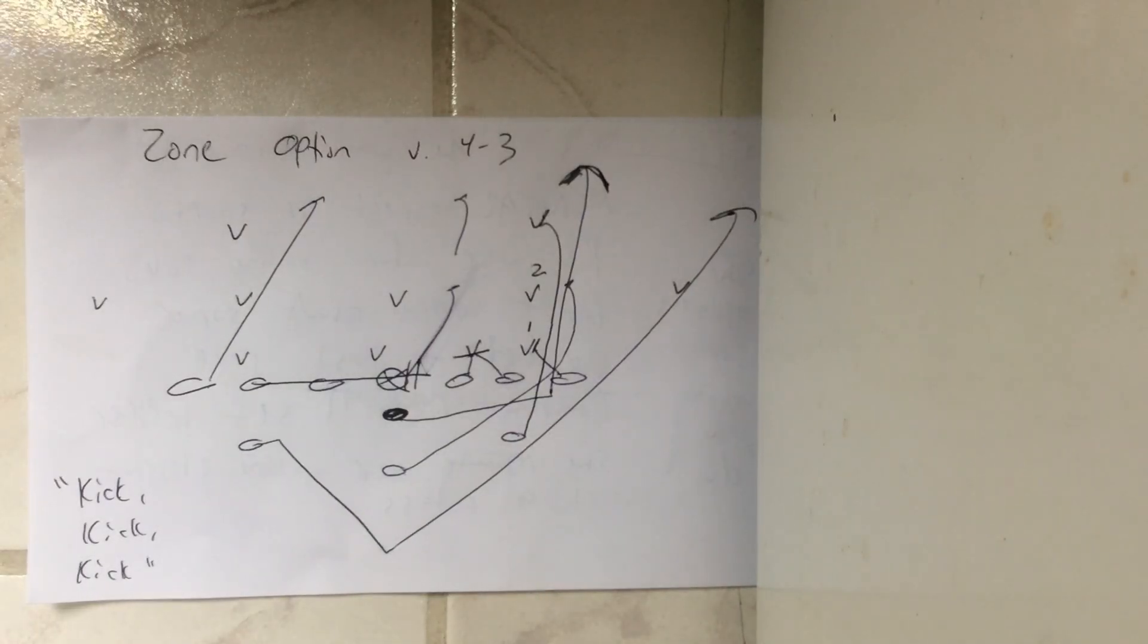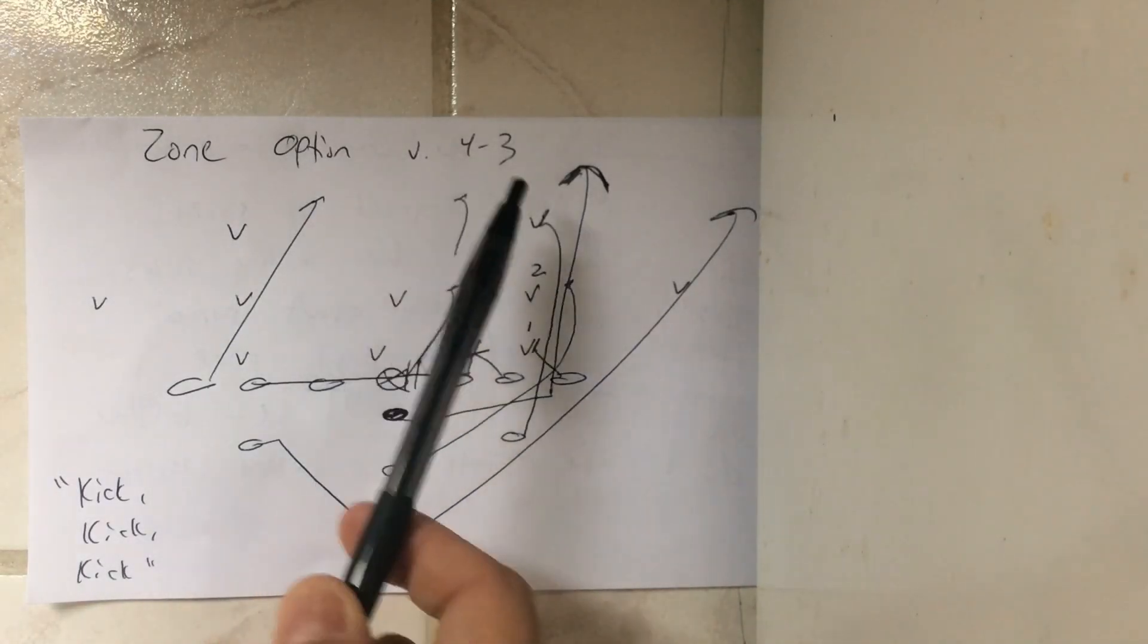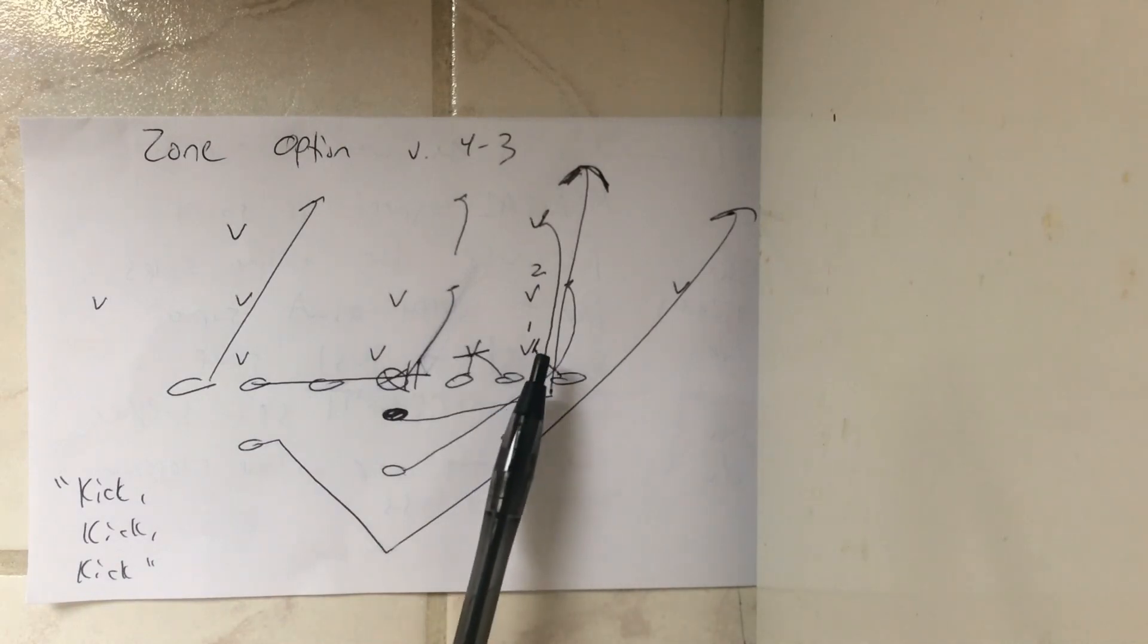Dr. Sella here, and when you call zone option and they give you a rule of four, like in a 4-3 defense where they give you a one, a two, and then a corner and a play side safety.